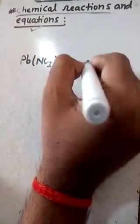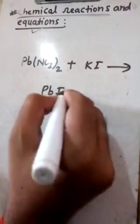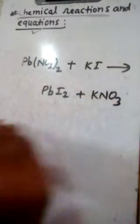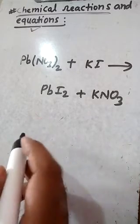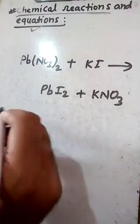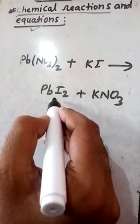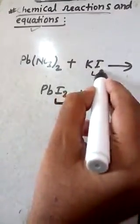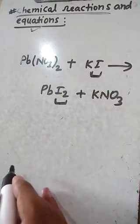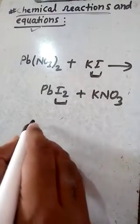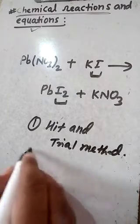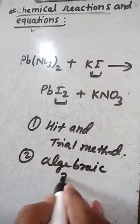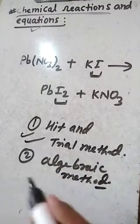Another example: Pb(NO3)2 + KI → PbI2 + KNO3. This is also an unbalanced chemical equation. There are two important methods to balance a chemical equation: the first is the hit and trial method, which is the most common, and the second is the algebraic method.